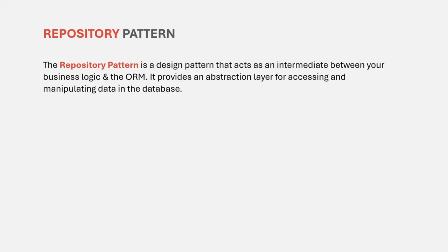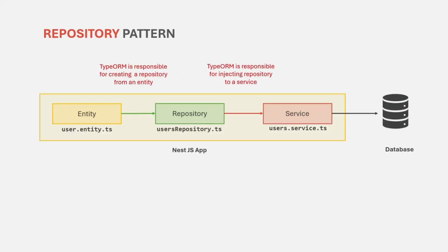Along the way, we are also going to understand a few terms like entity and repository. When you create your NestJS application, you are going to create an entity file and you will have a service file. Along with that, you will also have other files like a module file and controller. Here we are talking about once we have received the request and that request has been passed over to the service, and the service has to run some business logic — for example, fetching some data from the database or inserting some data. Once the controller has passed the request to the service, the service will start its job. And for the service to contact the database and fetch and write data, the service needs a repository.